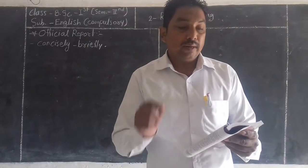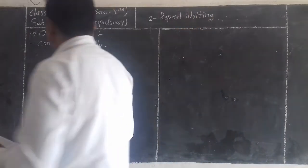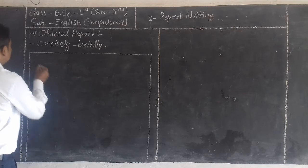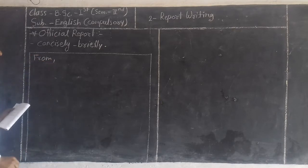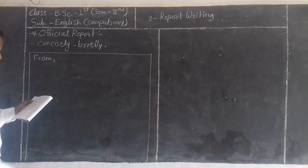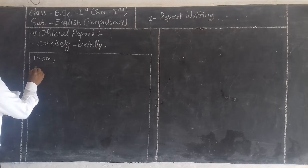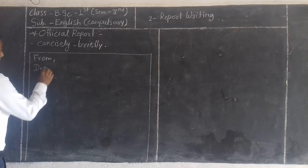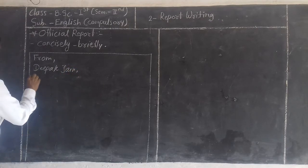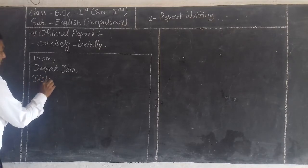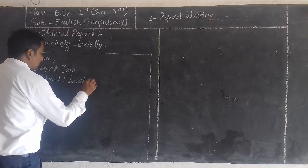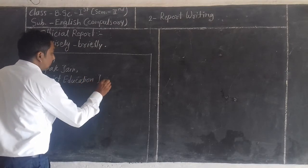First: the FROM field — the name and designation of the person writing the report. Suppose you are writing a report to an office. You write FROM here, then the name and designation of that person. For example: Deepak Jain, District Education Inspector.